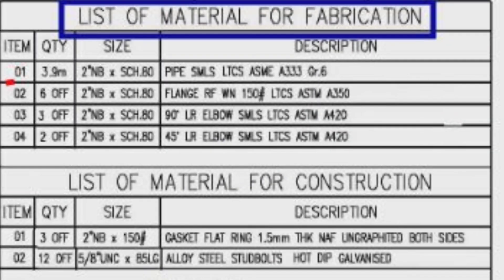The item number 1, the quantity total is 3.9 meters, size is 2 inches, wall thickness is schedule 80, pipe, seamless type, low temperature carbon steel material, ASME A333, grade 6.